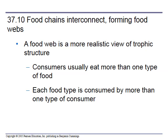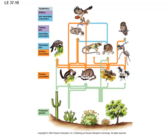Food chains interconnect forming food webs. A food web is a more realistic view of trophic structures — not just that straight-up arrow, but pointing to different things. The mouse doesn't just eat one thing; consumers usually eat more than one type of food, and each food is consumed by more than one type of consumer. The arrows always point upward in the direction of energy and nutrient flow — from producers up to consumers. You want to point from the producers up to the consumers.